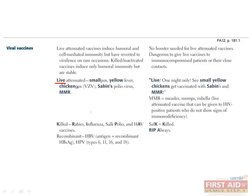Live vaccines incorporate attenuated or weakened viral strains and are effective against enveloped viruses that require cell-mediated immune responses to clear. The responses to a live virus will be Th1 and Th2, thereby stimulating longer-lasting immunity through the development of humoral, cellular, and memory immunity. The risk with live vaccines is that they can revert to active virulent strains. The live viral vaccines include smallpox, yellow fever, chickenpox (VZV), Sabin's polio virus, and MMR.